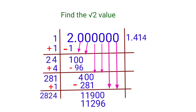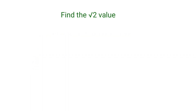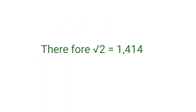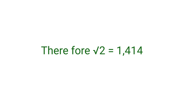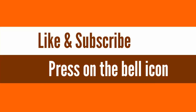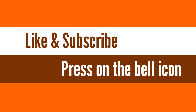We only need 3 digits after the dot, so we stop here — no more subtraction or multiplication needed. Therefore, the value of root 2 is 1.414. This is the long division method to find the value of root 2. If you like this video, please subscribe to my channel and press the bell icon.